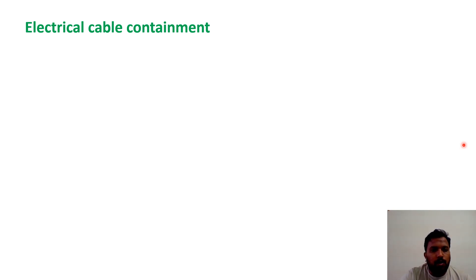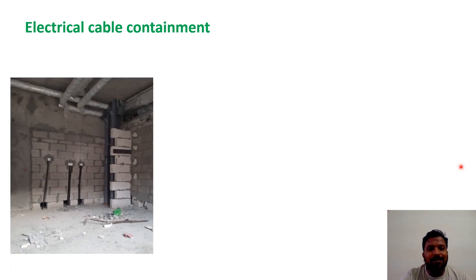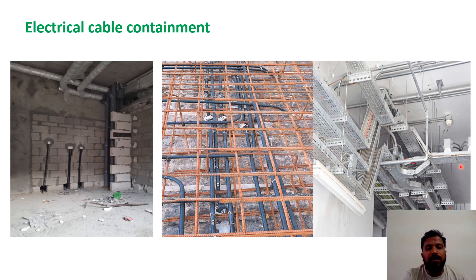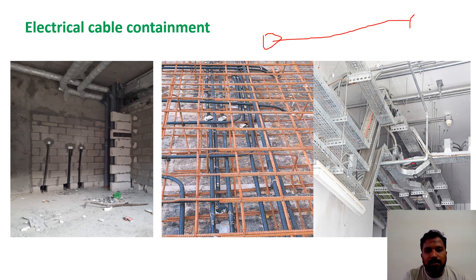What is Electrical Cable Containment System? An Electrical Cable Containment System is nothing but to provide routing or to protect the electrical cables, either inside block walls, slabs, or suspended. So, if you want to provide a cable from one place to another place, you require some containment.